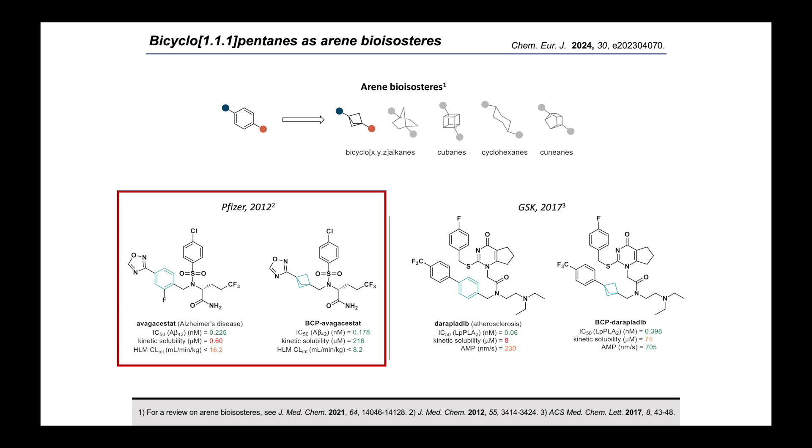To give another example, later in 2017, my colleagues at GSK reported the BCP analogue of this Lp-PLA2 inhibitor for the treatment of atherosclerosis. Incorporation of the BCP core similarly gave a significant increase in solubility, and in this case also improved membrane permeability, again while maintaining subnanomolar potency against the target.